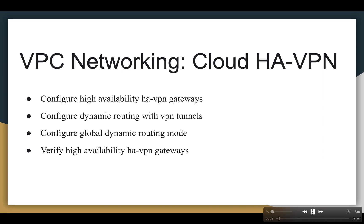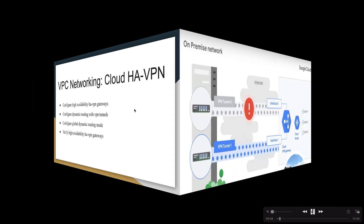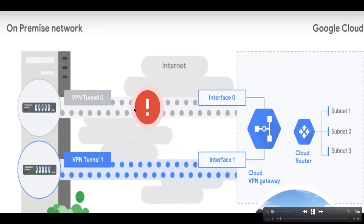First we are going to see what is Cloud VPN. Cloud VPN securely extends your peer network to Google's network through an IPsec VPN channel. Traffic is encrypted and travels between the two networks over the public internet. Cloud VPN is useful for low volume data connections. High availability VPN is an IPsec VPN solution to enable secure connectivity between your on-premise network to your Google Cloud Virtual Private Cloud network.